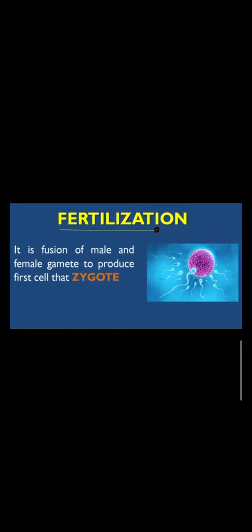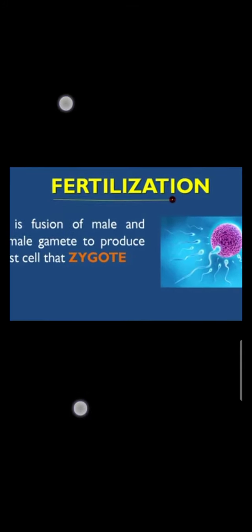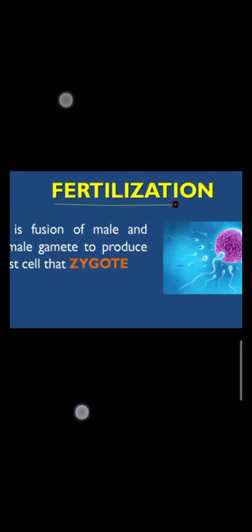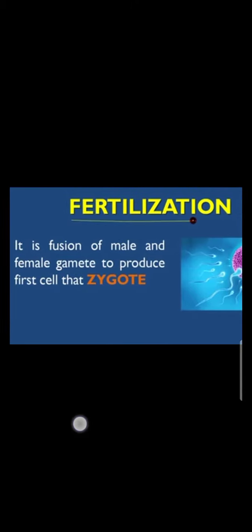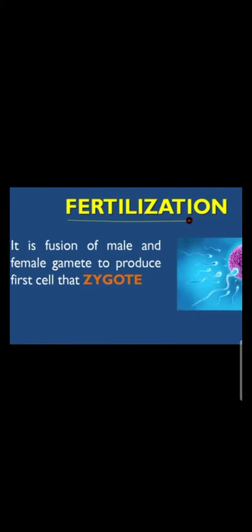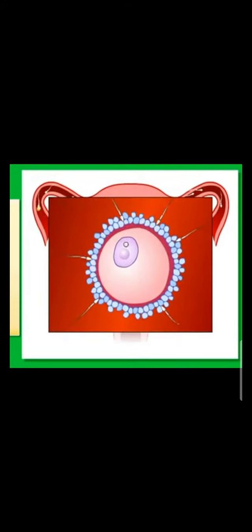In the last video, we studied about the male and female reproductive organs and fertilization. Fertilization is the process of fusion of male and female gametes to produce the first cell, called the zygote. As this fertilization in human beings takes place inside the female body, therefore it is also called internal fertilization, as it takes place inside the oviduct.